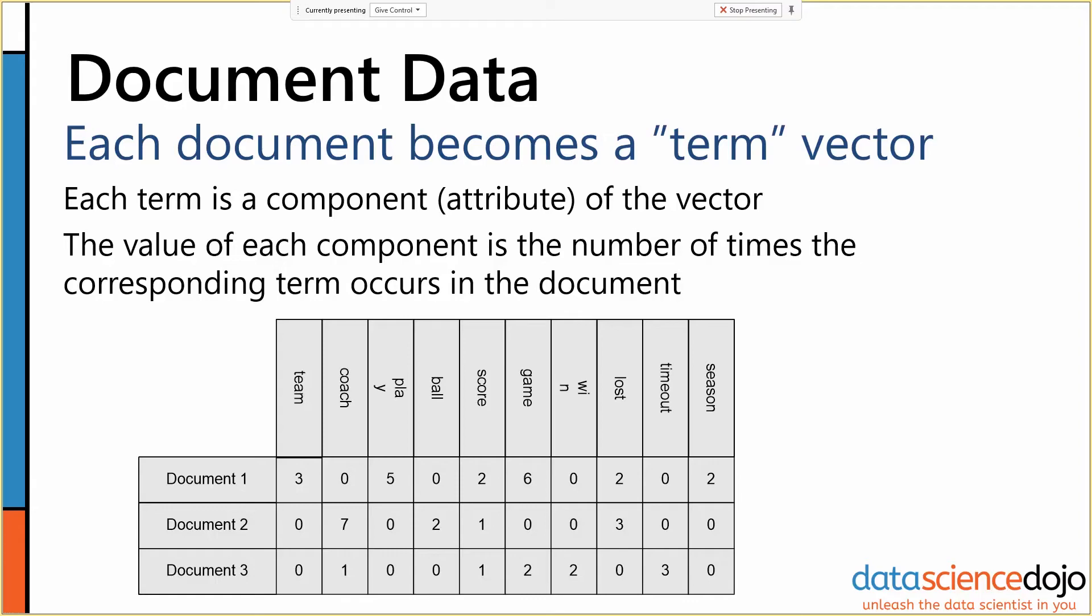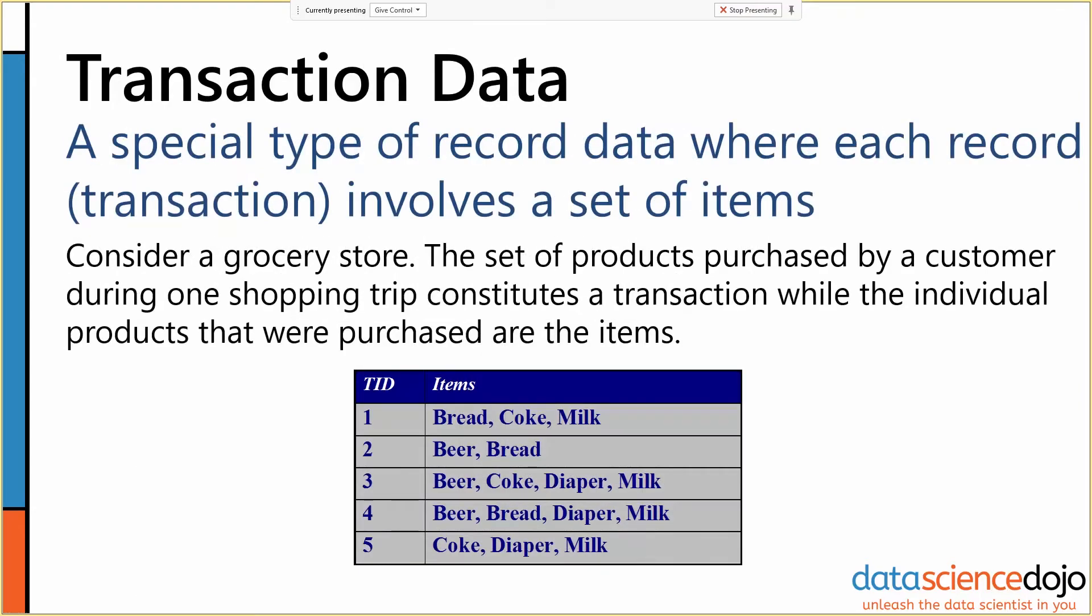The last special kind of record data we're going to talk about here is transaction data. This shares some similarities to document data, and you can use some of the same analysis, but there's different semantics around it as well. Transaction data is exactly what it sounds like: record data where each record involves a set of items.